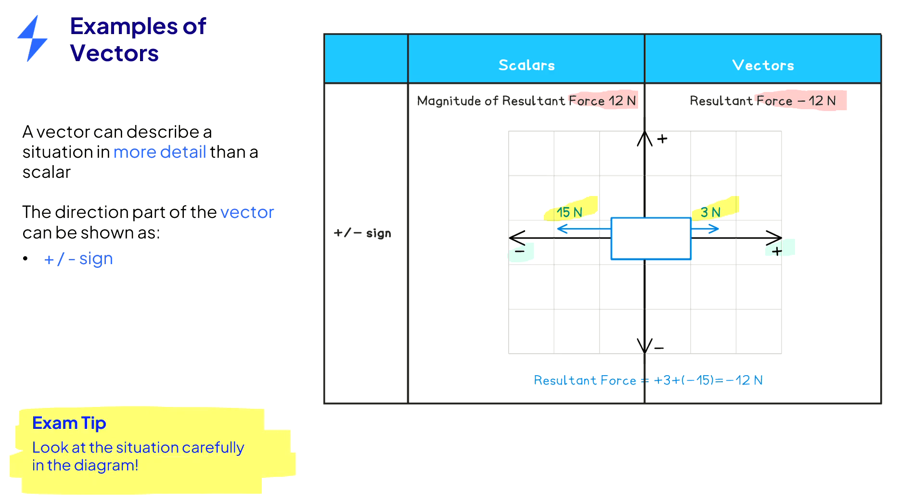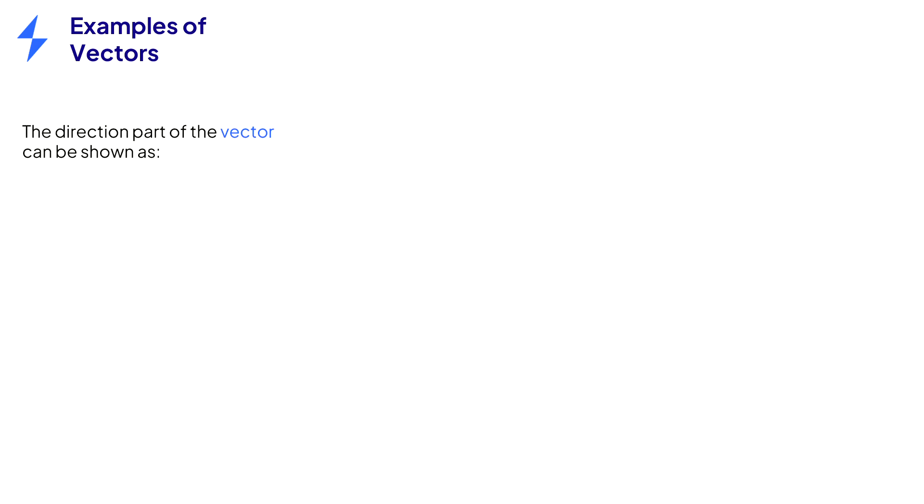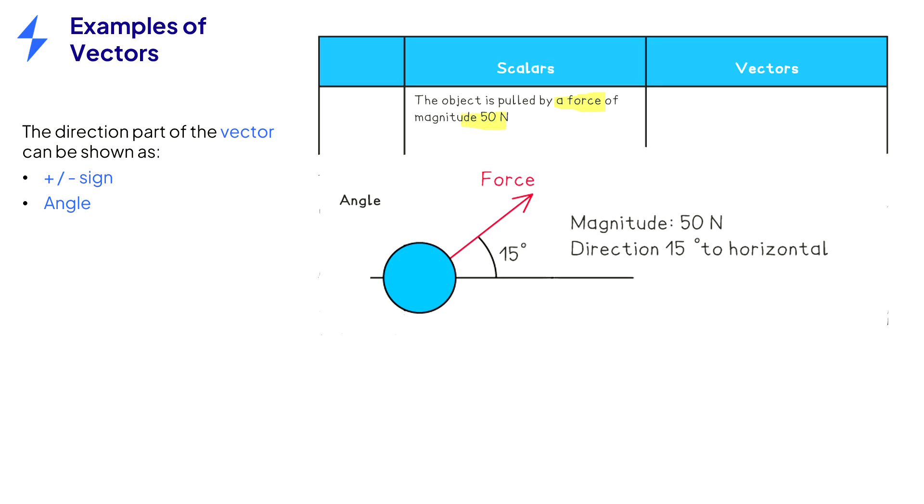Always look at the situation in the diagram really carefully. The direction part of the vector can also be given by an angle. In this second example, the force has a magnitude of 50 newtons. This is the scalar. But as a vector, it can be described as 50 newtons at an angle of 15 degrees to the horizontal. To get full marks in this question, you must say that the angle is 15 degrees to the horizontal, or the description is not complete.